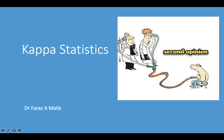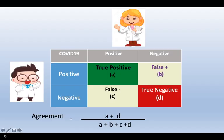If you look at the chart, a patient is being observed by two independent clinicians and their findings are described from a statistical point of view. The basic understanding of Kappa statistics involves two doctors — one declaring certain patients as true positive and others as true negative. For observed agreement, we generally use A plus D — the true positives plus true negatives — divided by the total number of observations, which are A, B, C, and D.